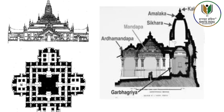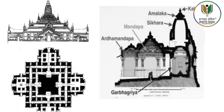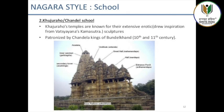In North India, it is common for an entire temple to be built on a stone platform with steps leading up to it. Unlike in South India, it does not usually have elaborate boundary walls or gateways. While the earliest temples had just one tower or shikara, later temples had several. The Garbhagriha is always located directly under the tallest tower.